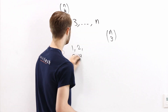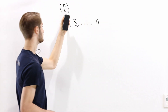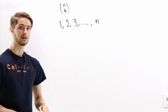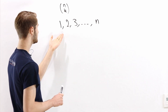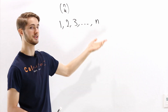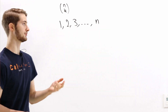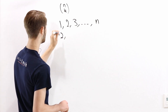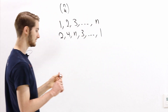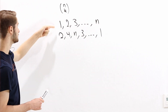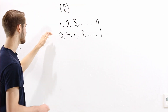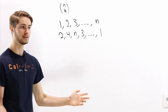In this video, I want to go through one of my favorite proofs for the formula for the value of n choose k. In order to do that, we need to talk about orderings. Here I have listed the numbers 1, 2, 3, and so on up to n in increasing order. But we could also write them in a different order — for example, 2, 4, n, 3, and so on, with maybe the last number being 1. Both have the same numbers from 1 to n, just switched around into a completely different order.